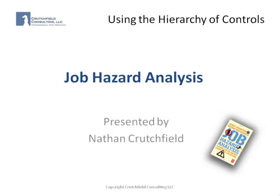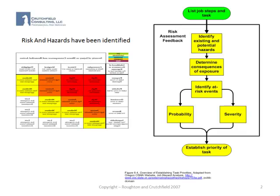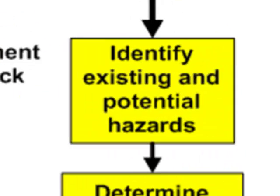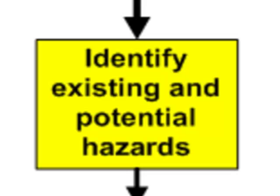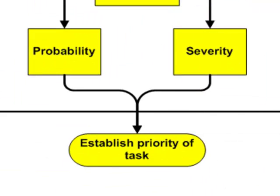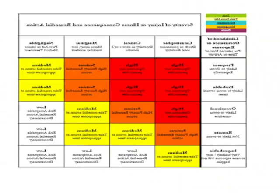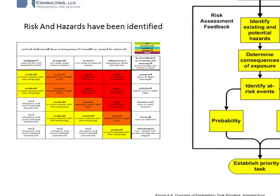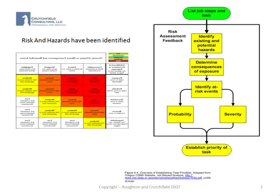Hello, this is Nathan Crutchfield, and I'd like to talk with you briefly about the use of the hierarchy of controls. You've gone through your workplace and identified existing and potential hazards, determined the consequences of exposure, identified at-risk events, and determined both the probability and severity based on the risk assessment matrix. You're beginning to establish the priorities of the various jobs and tasks, and how you might go about best controlling the hazards and the risk. This is where the hierarchy of controls comes into play.